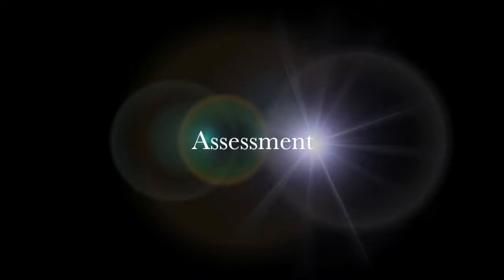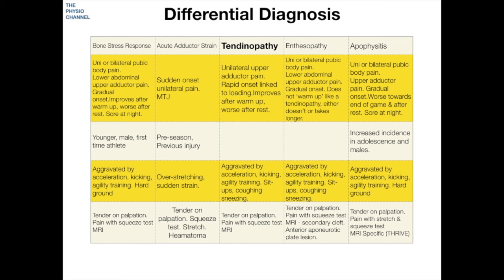Welcome to the adductor tendinopathy assessment lecture. Let's look at some of the other pathologies that could present very similarly to an adductor tendinopathy, shown on the screen here. For a tendinopathy, we're looking for unilateral upper adductor pain with rapid onset likely linked to loading. Symptoms, like many tendinopathies, will often improve after a warm-up but may worsen with rest.